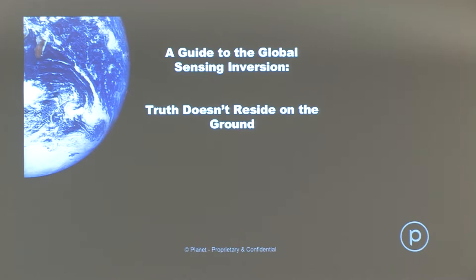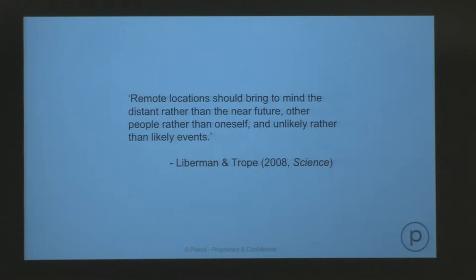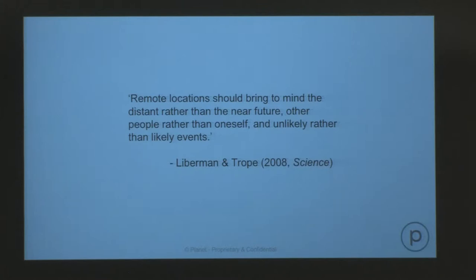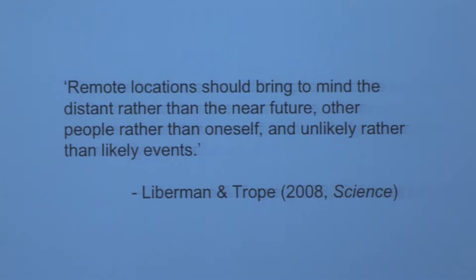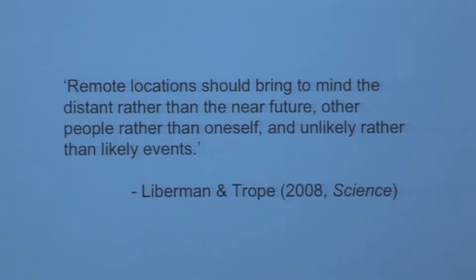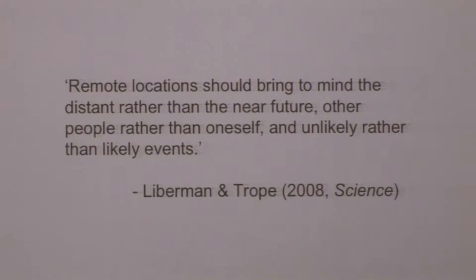This comes from my own personal experience with remote sensing and increasing awareness of human biases. A favorite paper of mine by Lieberman and Trope in Science concerns how the human mind relates to objects that are either present or remote. They say remote location brings to mind the distant rather than near future, other people rather than oneself, and unlikely rather than likelier events. In other words, your brain chemistry is wired to trust things you can touch — and you're even more likely to trust the word of another human who has held something than a remote instrument looking at it.